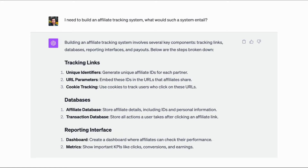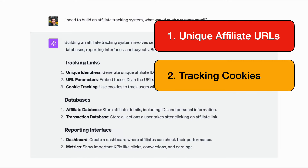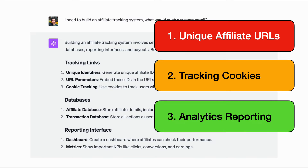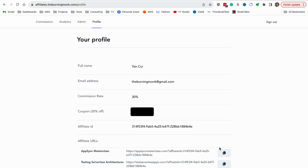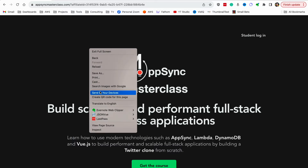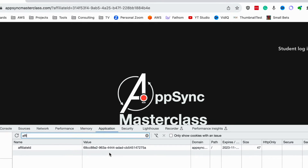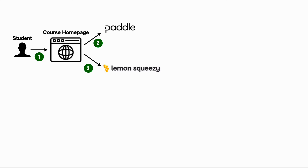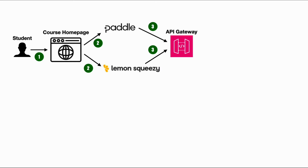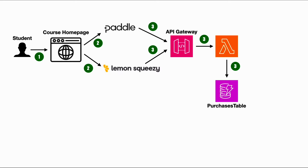Since I'd never built an affiliate tracking system before, I asked ChatGPT what it consists of. It said I need to give every affiliate a unique URL, use cookies to track users who click those URLs, and build reporting capabilities to track conversions and earnings. When a student clicks an affiliate URL and lands on the home page, we set a cookie to track the affiliate ID. You have to decide whether the first or last affiliate gets the commission, and how long to keep the cookie. When the student makes a payment — through Paddle or Lemon Squeezy depending on the course — the affiliate ID is passed to the payment processor, and when the payment is complete their webhook hits my API, which captures the affiliate ID and saves it in a DynamoDB table.